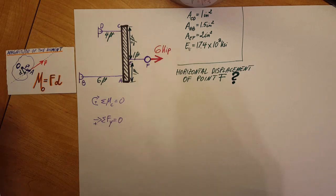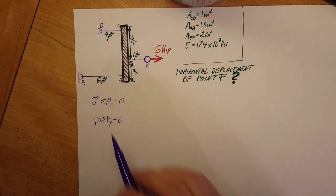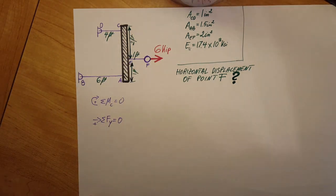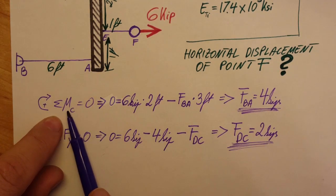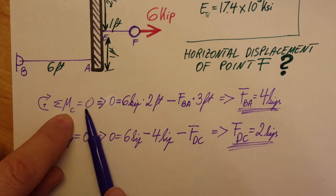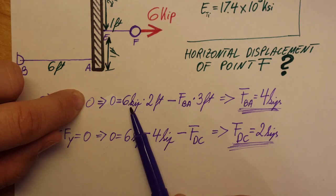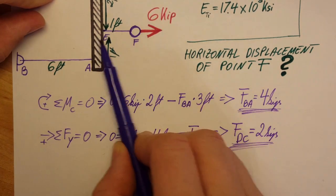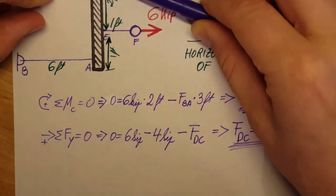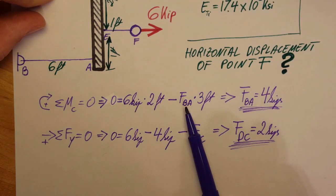I'm gonna use the sum of the forces in the y direction equals zero. This is just simple statics, and let's calculate what we have. We're gonna be able to find some of these forces. Here it is. I plugged in the information so the sum of the moment at point C equal to zero.